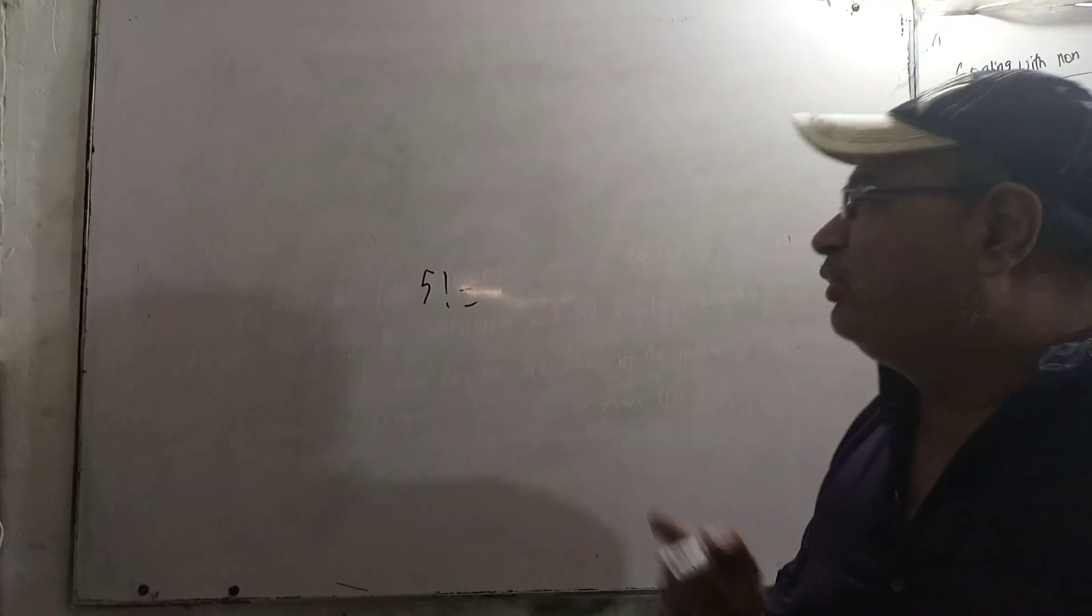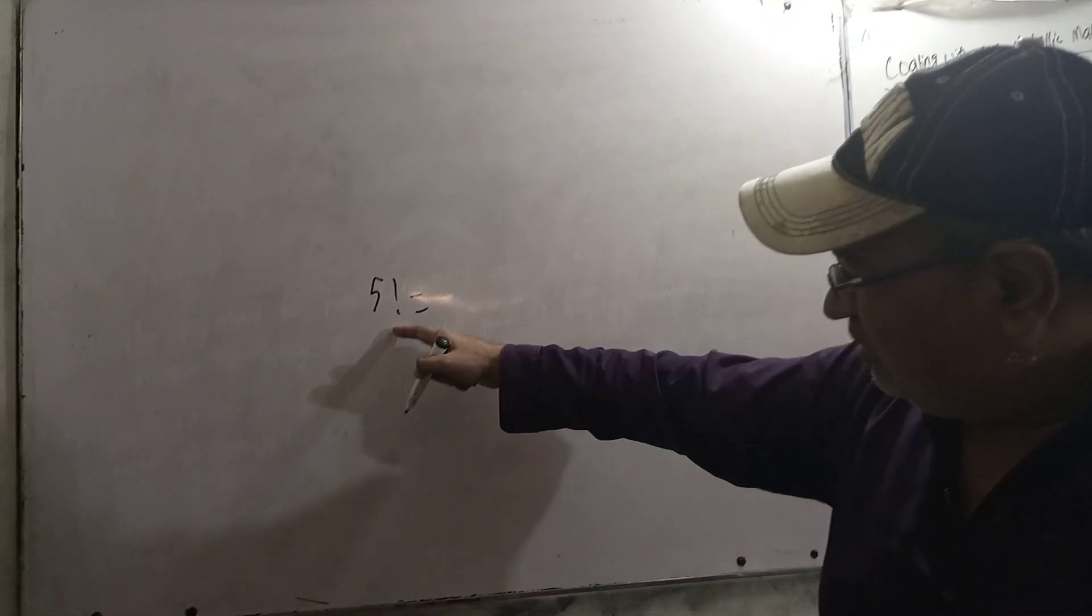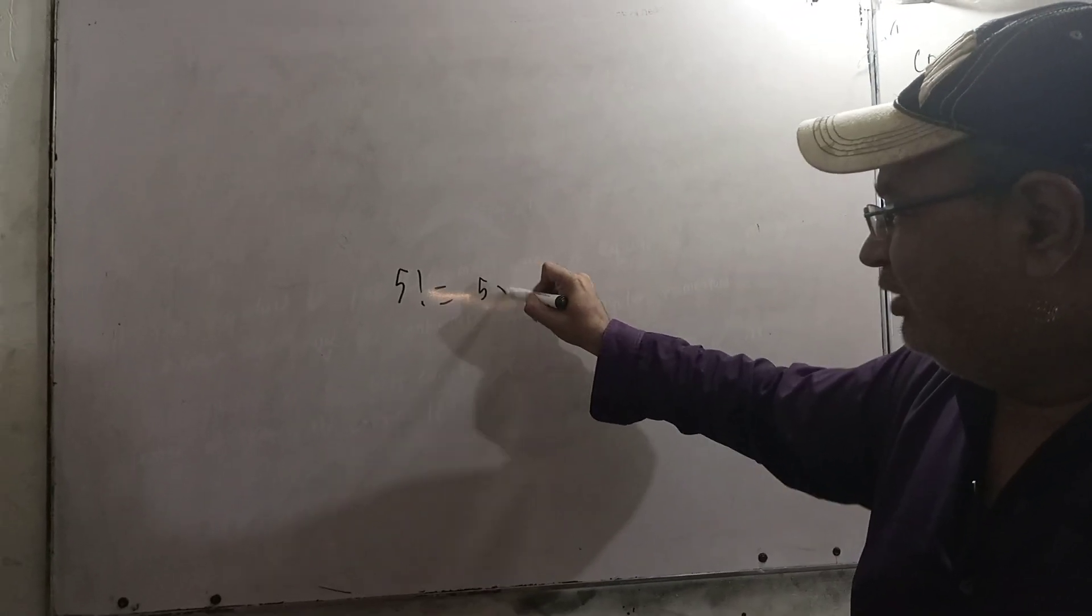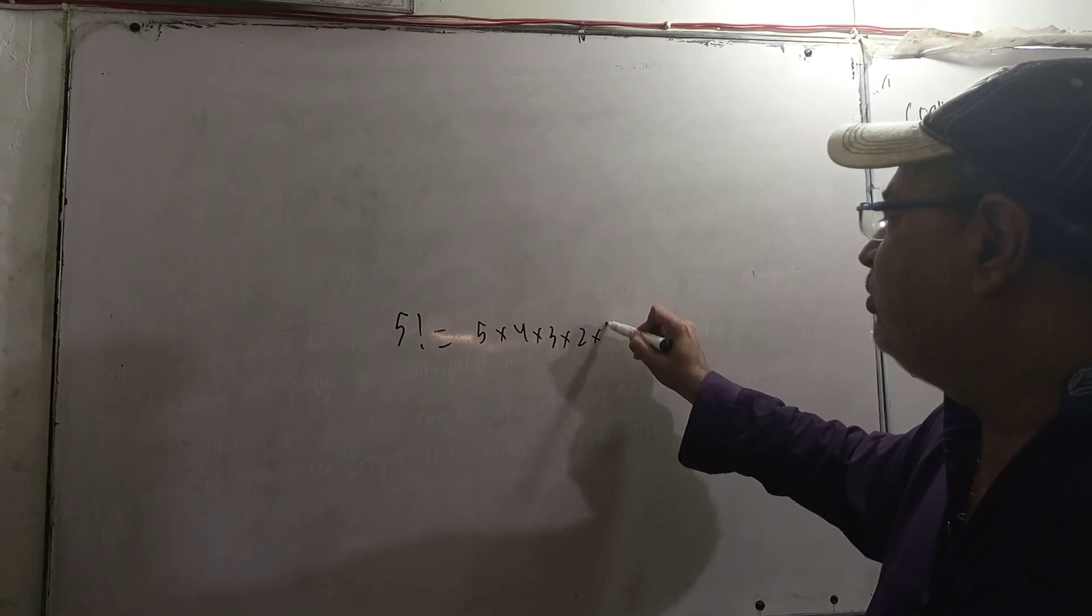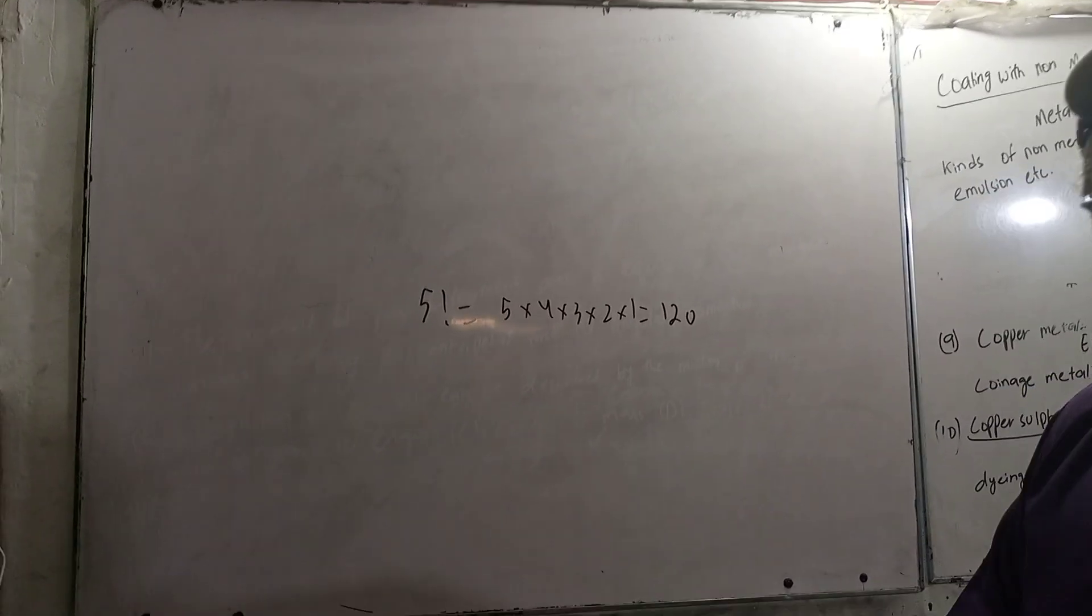I asked what is the factorial? If you don't have permutation combination probability, and if you don't know what is the factorial, tell me what is the factorial? 5 factorial: 5×4×3×2×1. I mean, we multiply all this one time.